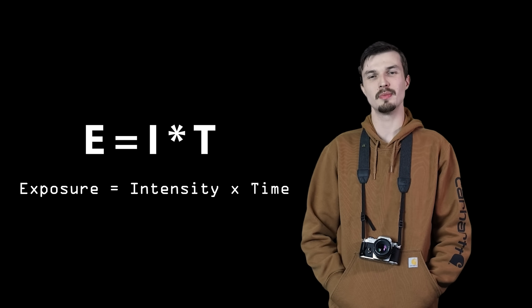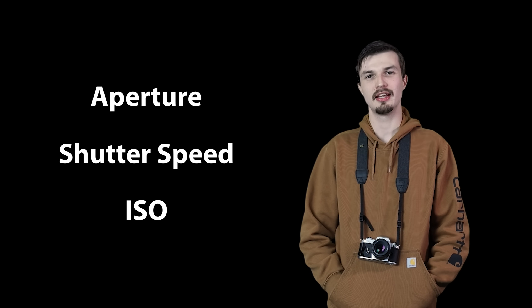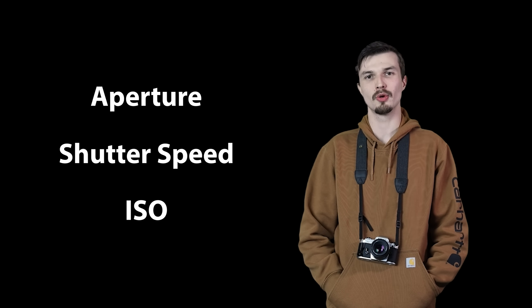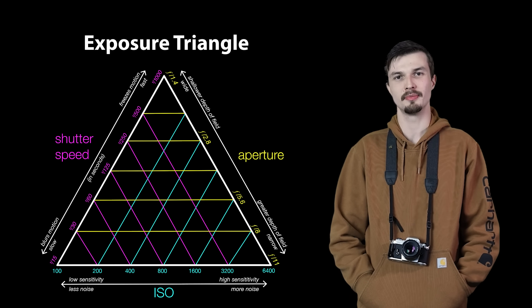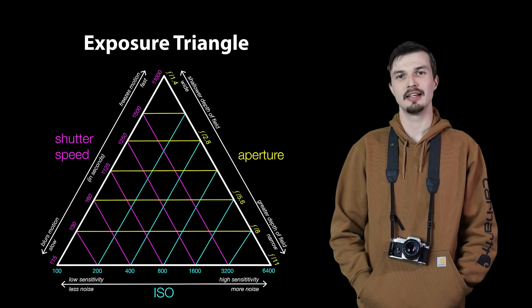Exposure is managed by three key settings: aperture, shutter speed, and ISO. Together, they form what's called the exposure triangle. Each of these settings controls light in its own way, and each has a unique effect on your photos.